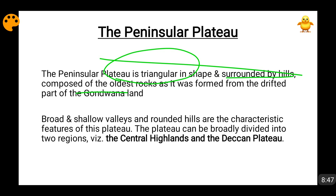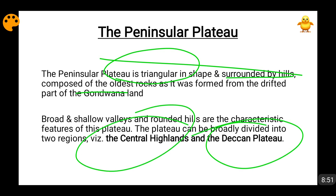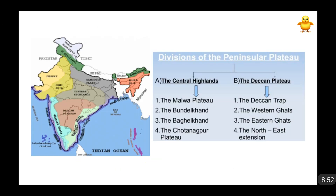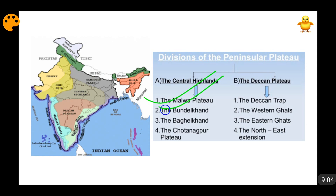This plateau can be divided into two parts: the Deccan plateau and the central highlands. The central highlands include the Malwa plateau, Bundelkhand, Baghelkhand, and the Chotanagpur plateau. In the Deccan plateau comes the Deccan Trap, the Western Ghats, the Eastern Ghats, and the northeast extension.